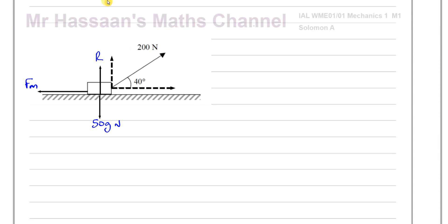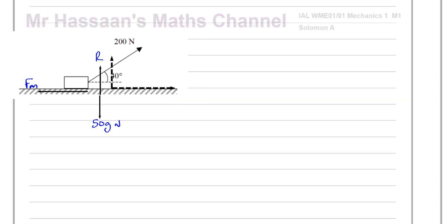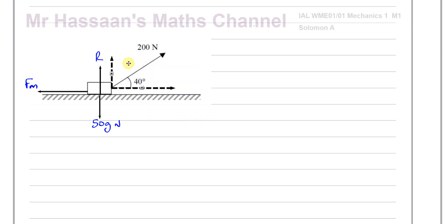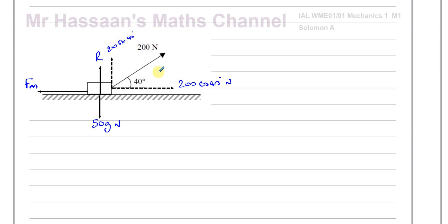The component of the 200 newton force in the horizontal direction is the adjacent side relative to the angle, so it's 200 times cosine 40 newtons. The component perpendicular to the direction of motion — the opposite side — is 200 times sine 40. So those are the components of this force parallel and perpendicular to the direction the block would move.